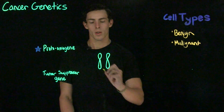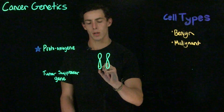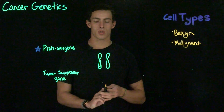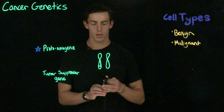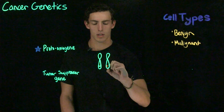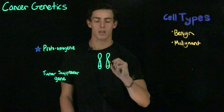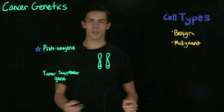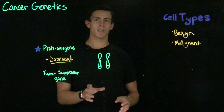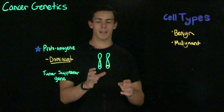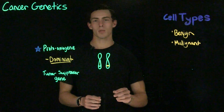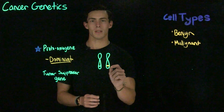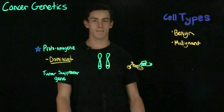First, let's look at the proto-oncogene. Shown here in yellowish green, we'll say this is a normal gene. And shown here in orange, this is going to be the mutant gene. So with a proto-oncogene, we say their inheritance is done in a dominant fashion. The reason why we consider this to be dominant inheritance is because we only need one mutant allele for this proto-oncogene to actually cause cancer.